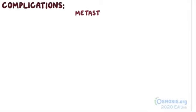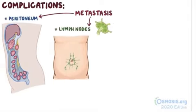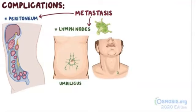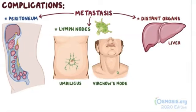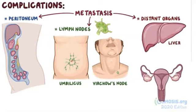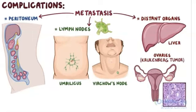Complications for gastric adenocarcinoma include metastasis to the peritoneum, to lymph nodes like the ones around the umbilicus, and the left supraclavicular node, or Virchow's node, or to distant organs, most frequently the liver. The bilateral metastasis of diffuse adenocarcinoma to the ovaries causes a particular tumor called the Krukenberg tumor, which has abundant signet ring cells.